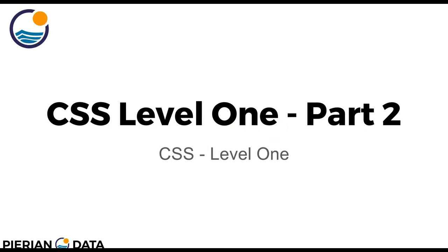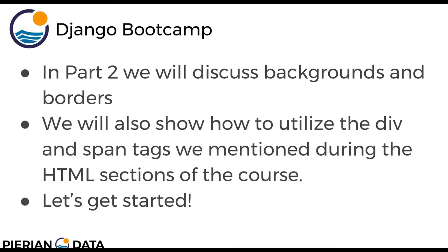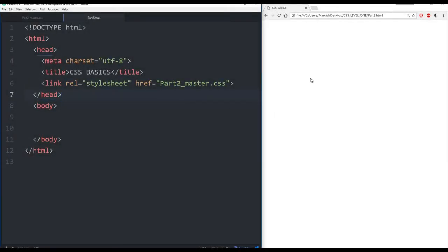Hello everyone, and welcome to part 2 of CSS level 1. In part 2, we're going to begin to discuss backgrounds and borders. We'll also show you how to utilize the div and span tags that we mentioned during the HTML sections of the course but weren't actually able to really use. Let's get started by jumping to the editor and our CSS files. Here I have my browser open as well as my editor. I have an HTML file called part2.html, and I've used this link with the stylesheet to reference a CSS file called part2_master.css. You can really name these whatever you want — just make sure your link is correct.